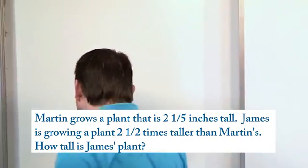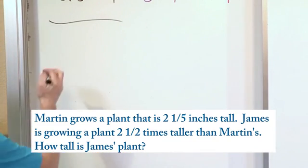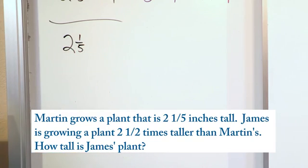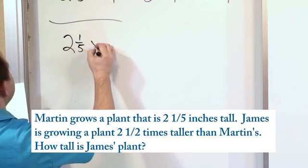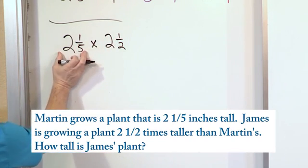So in order to pull that off, basically we write down what we know. We know that Martin's plant is two and one fifth inches tall. And we know that James is growing something that's two and a half times taller. So this is what the original plant is.